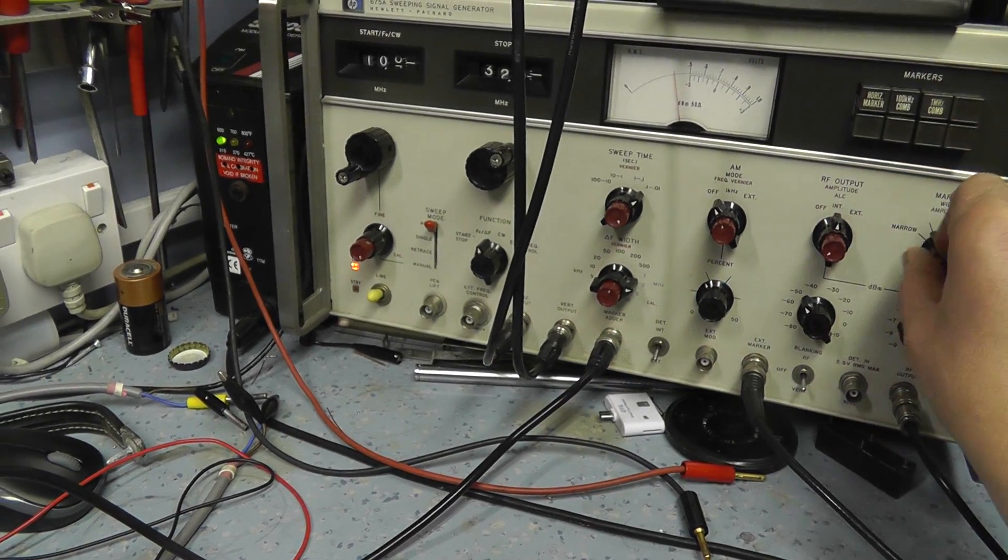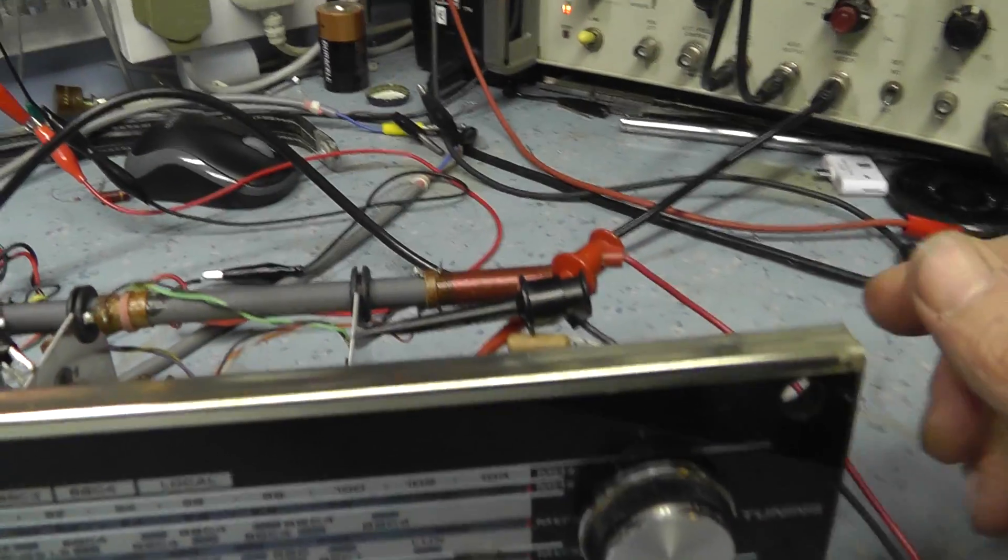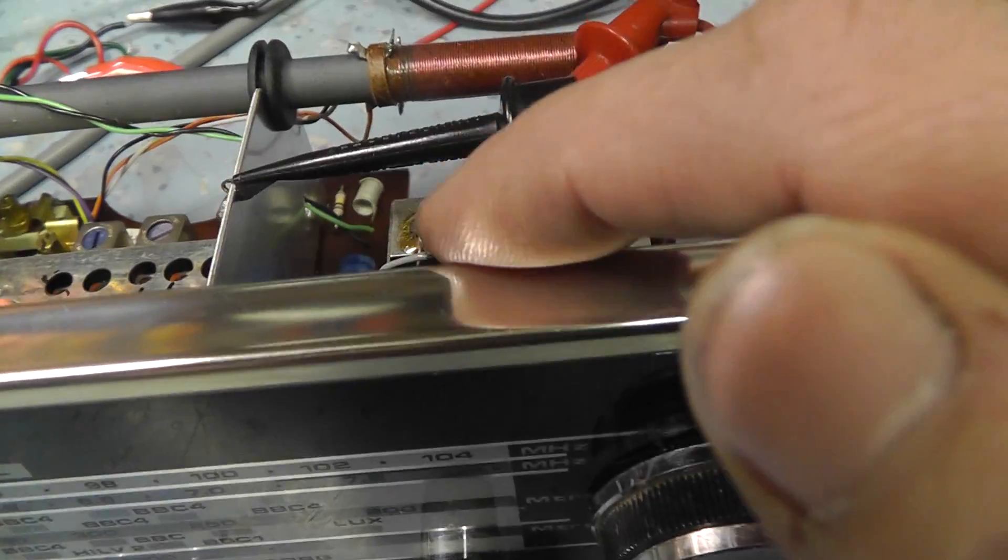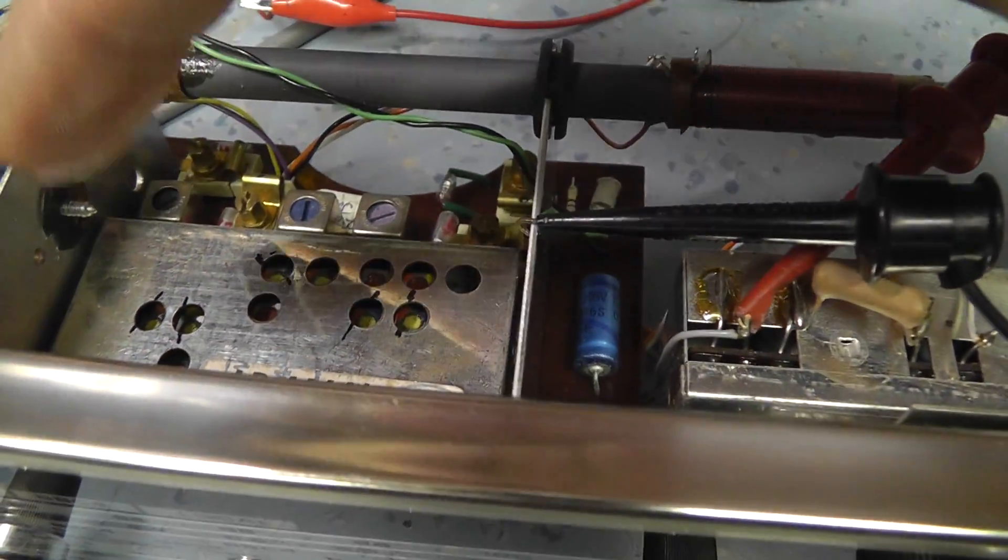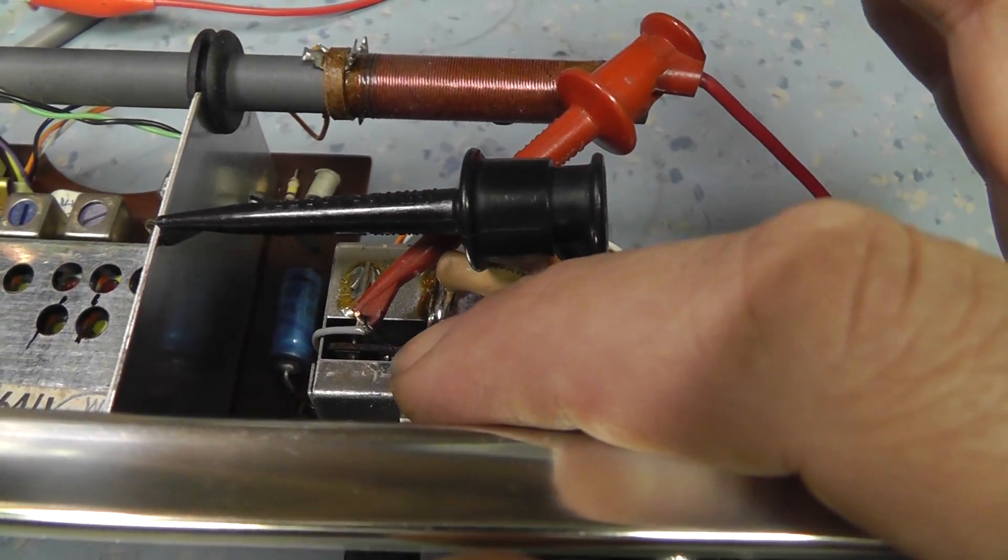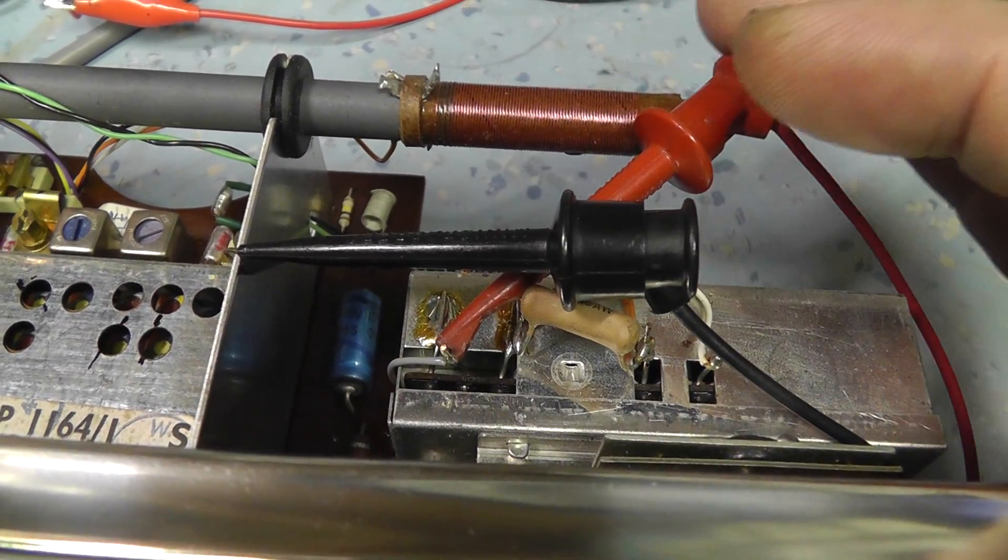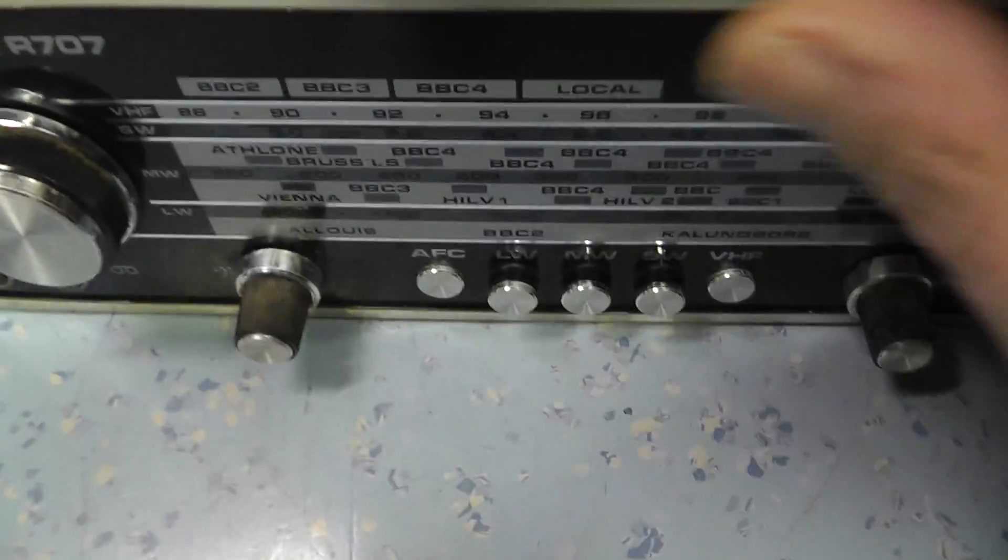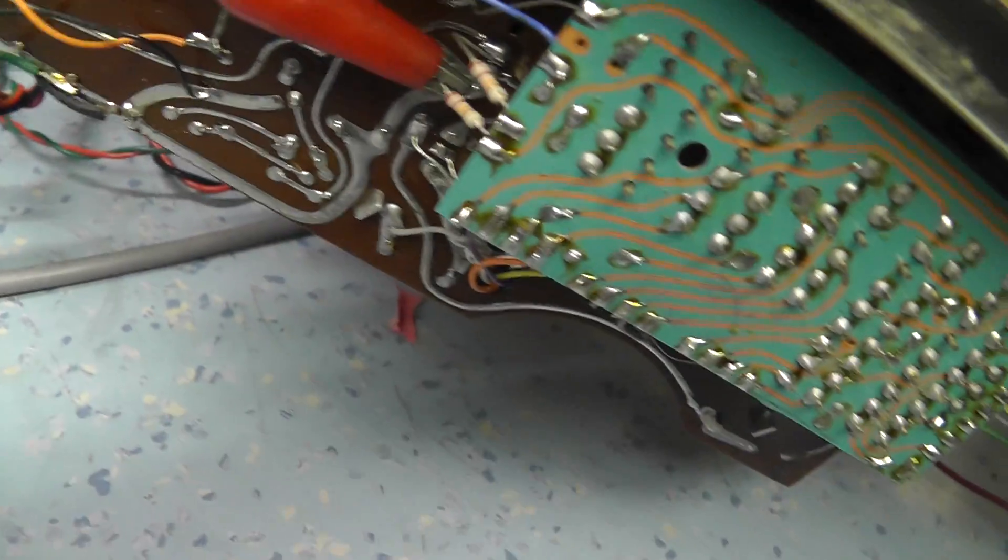So what we're doing at the moment is we're feeding in our swept frequency into the first IF, or the first part of the IF module. There's another IF amplifier in this module as well, but I'm actually bypassing that. So I'm feeding my signal into here and taking the signal out of the IF amplifier on that resistor, which seems to be the best place to do it.